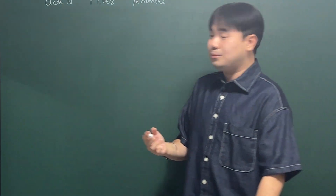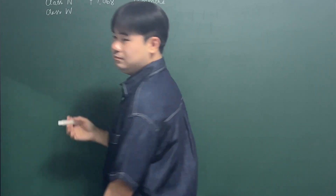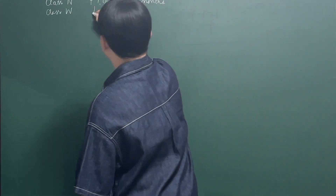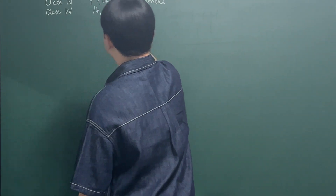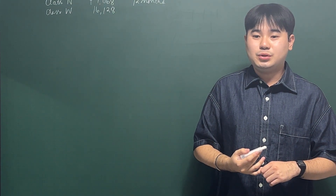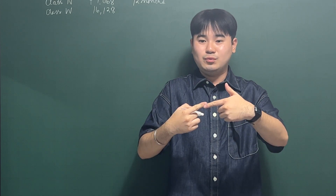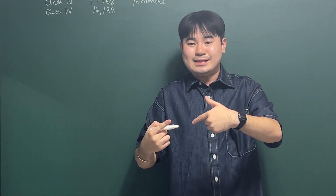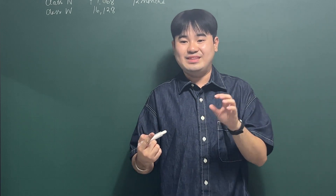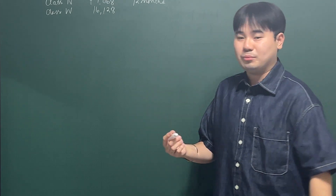Next is Class W, which amounts to 16,128 pesos, running from September 1, 2023 to August 31, 2025. Since August 31's next day is September 1, from 2023 to 2025 gives us two years, which is 24 months.